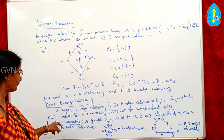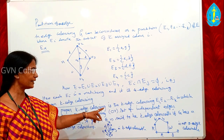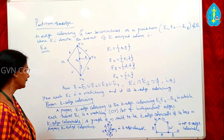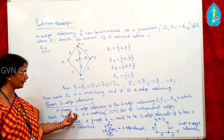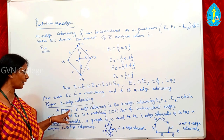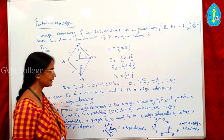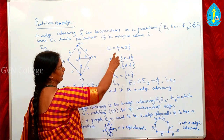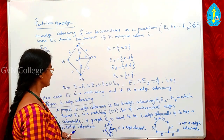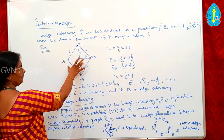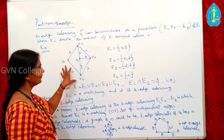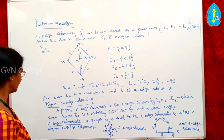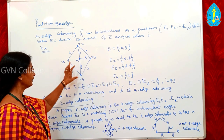A proper edge colouring is an edge colouring E1, E2, E3 in which each subset Ei is a matching — that is, each Ei is independent. In the above example, the four sets are independent sets, therefore it is a proper edge colouring coloured by 4 colours. Therefore a proper 4 edge colouring exists here.